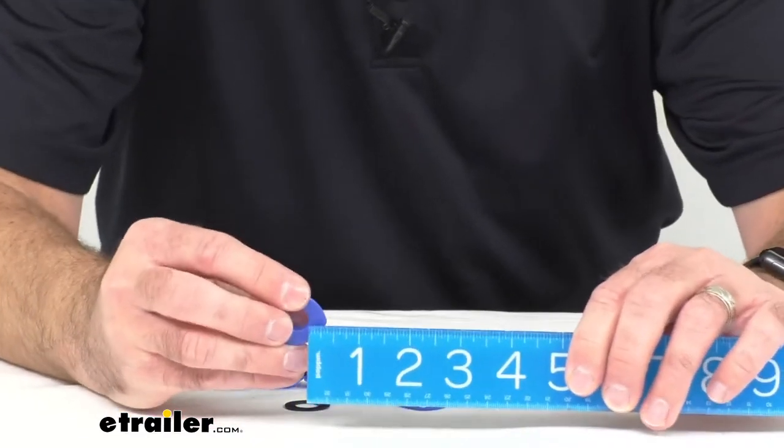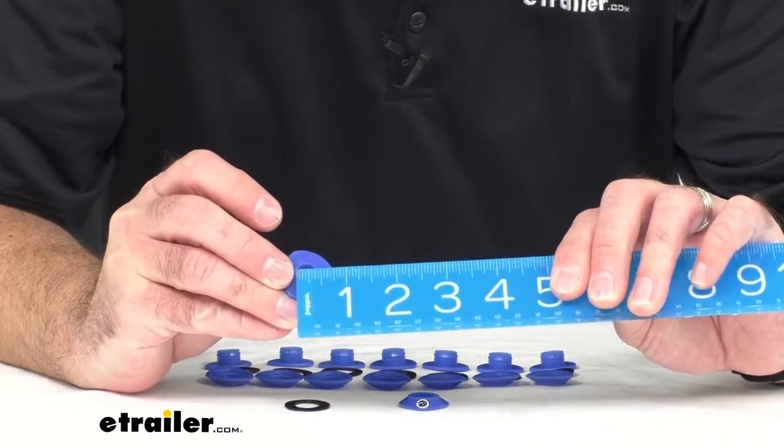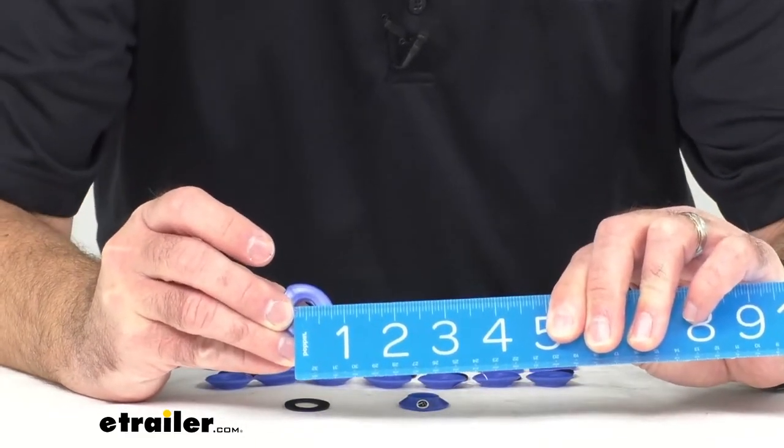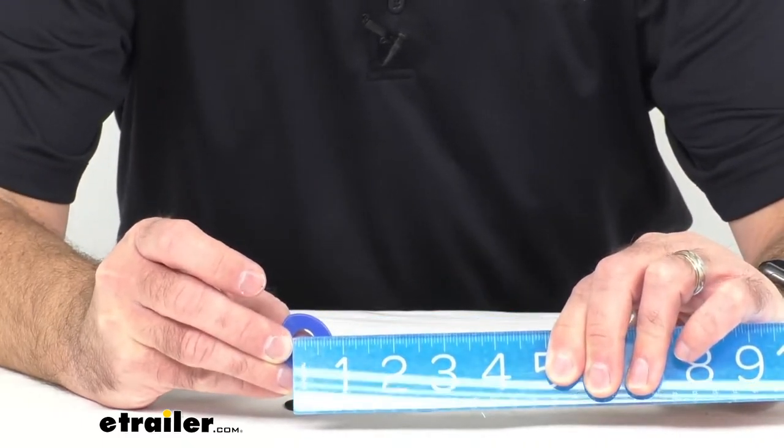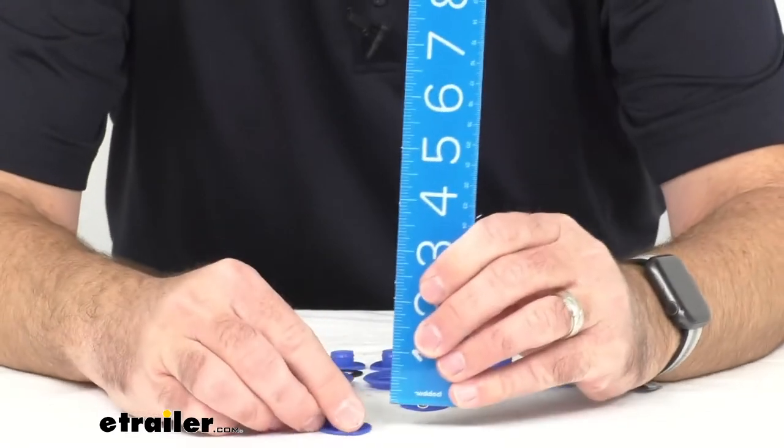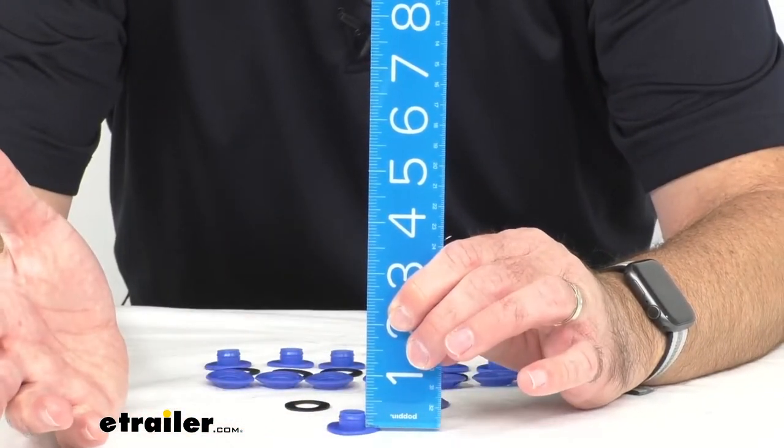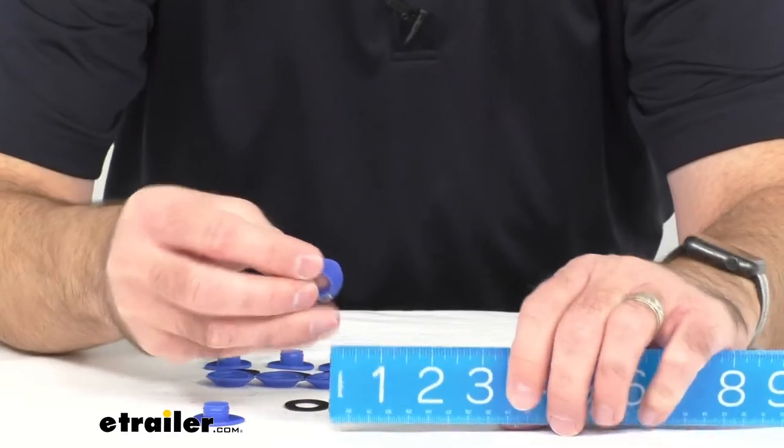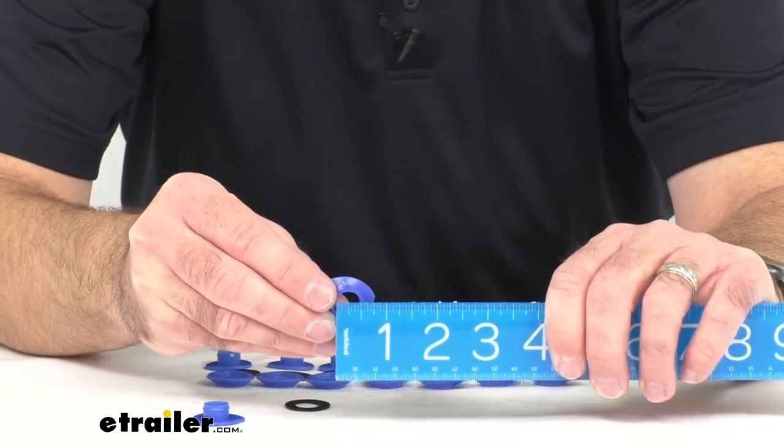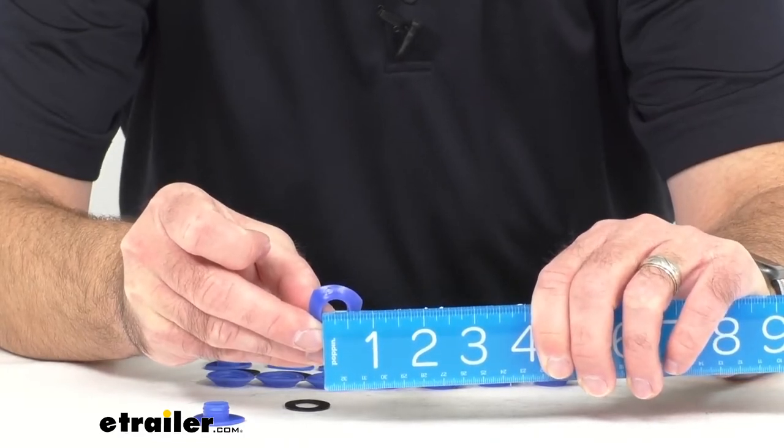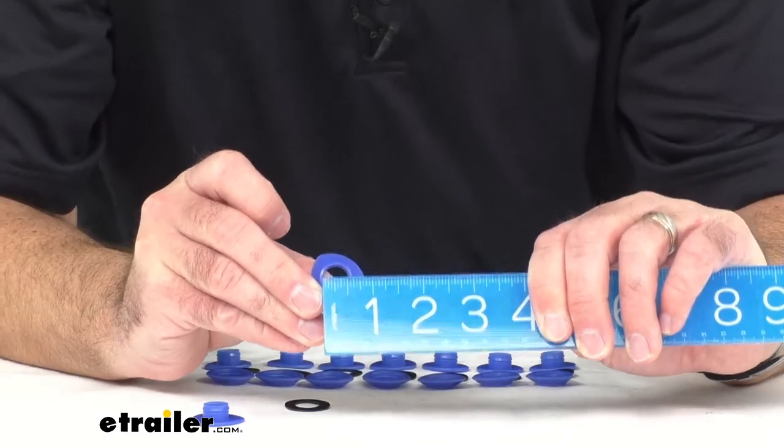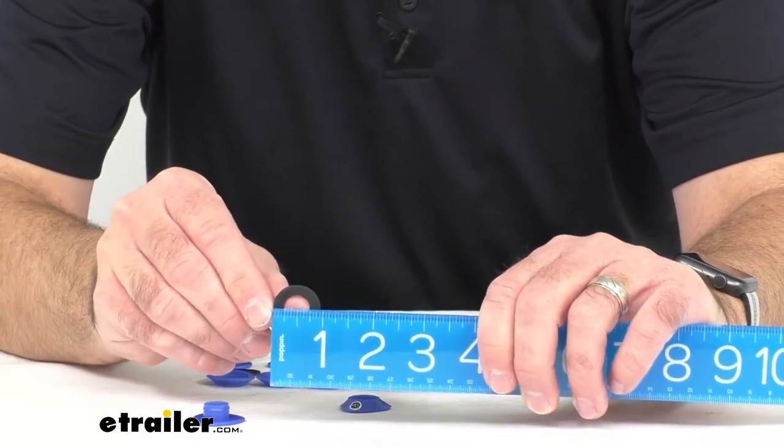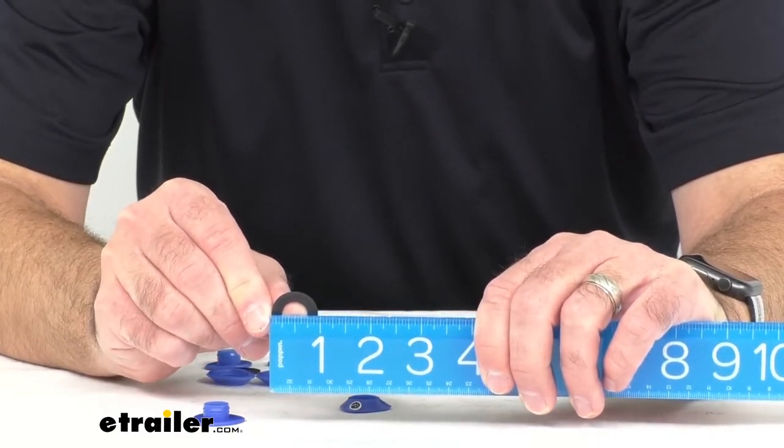And the inside diameter of the male end of the grommet we're sitting right at about three eighths of an inch inside diameter. And then the depth is going to be right at about a quarter of an inch. And then moving on to the female end of the grommet, the inside diameter of the hole here is obviously going to be a little bit larger. We're sitting about half an inch in diameter, inside diameter. And then the included washer, the overall diameter of that is going to be right at an inch across.